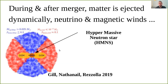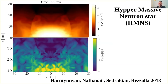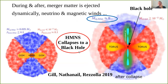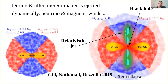Matter is first dynamically ejected as the stars spiral and merge, then via neutrino-driven winds and magnetic winds. This XZ slice at 18 milliseconds after merger shows density on top and the magnetic field below, reaching 10^16 gauss. When this hypermassive neutron star collapses to a black hole, a relativistic jet is born. This jet must drill through all the ejecta previously ejected, having enough energy to break out so we can observe it in the electromagnetic spectrum.